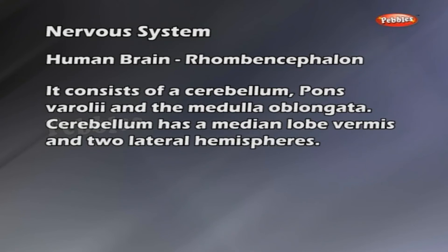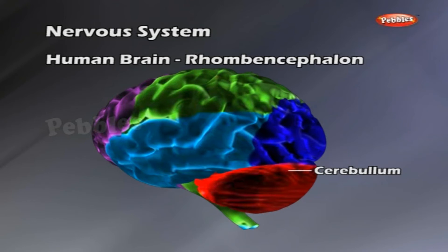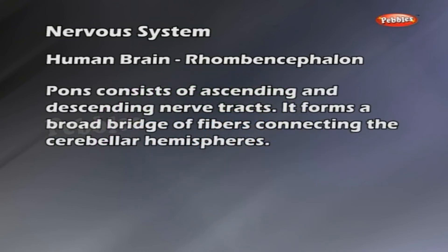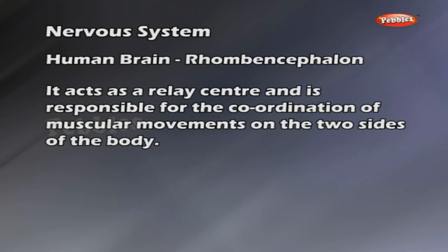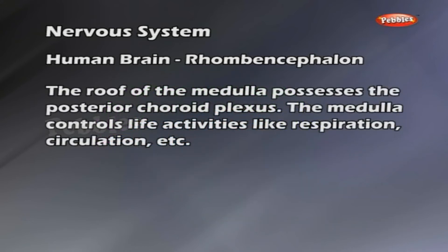Rhombencephalon consists of the cerebellum, pons varoli, and the medulla oblongata. Cerebellum has a median lobe called vermis and two lateral hemispheres. The cerebellum regulates and coordinates the movements of the skeletal muscles in actions like walking, running, etc., and also helps in the maintenance of body balance. Pons consists of ascending and descending nerve tracts. It forms a broad bridge of fibers connecting the cerebellar hemispheres, acts as a relay center, and is responsible for coordination of muscular movements on the two sides of the body. The medulla forms the bridge between the brain and the spinal cord. The roof of the medulla possesses the posterior choroid plexus. The medulla controls life activities like respiration, circulation, etc.